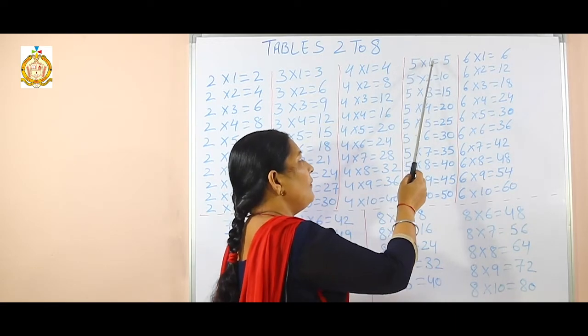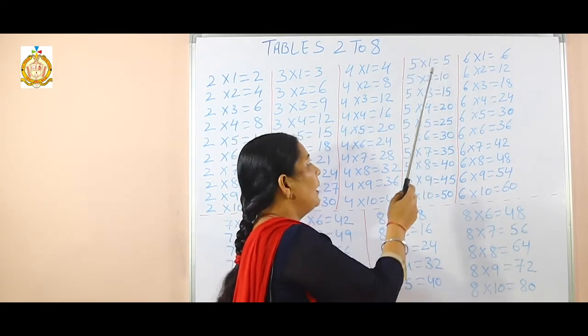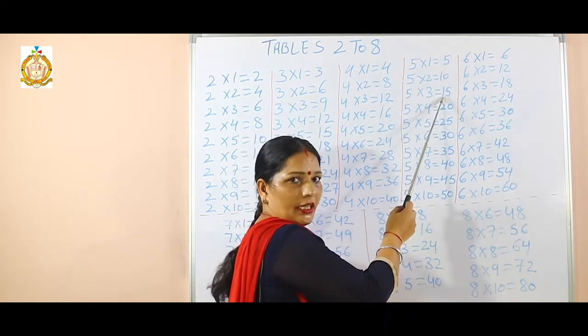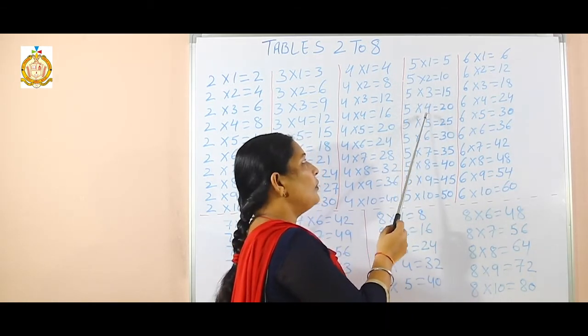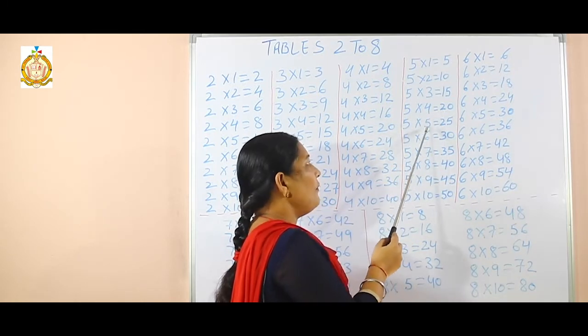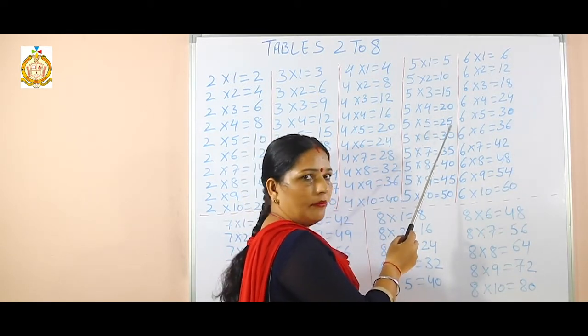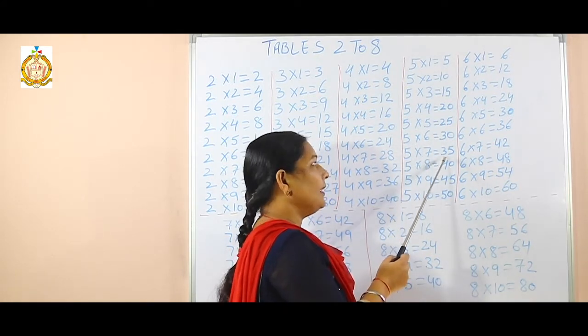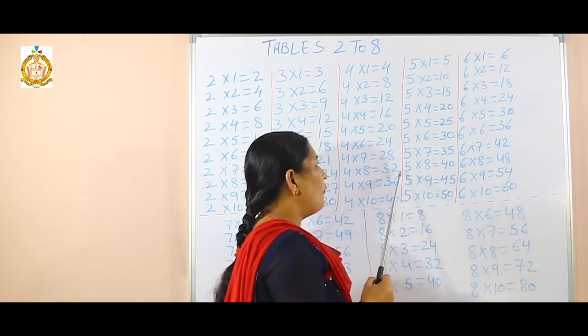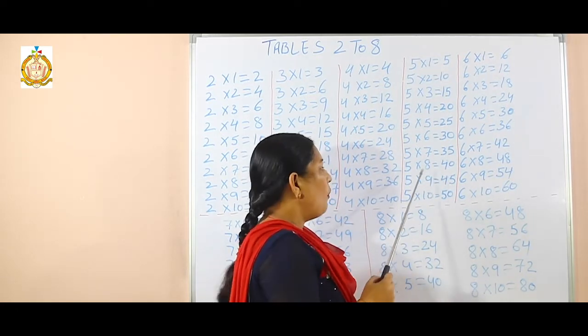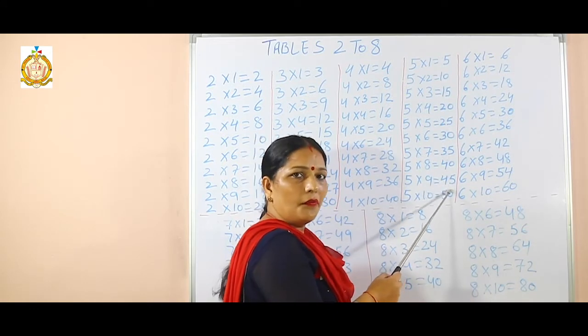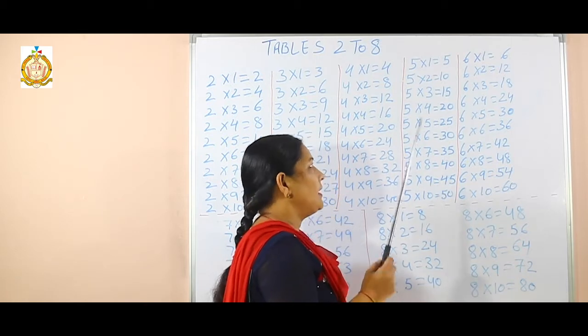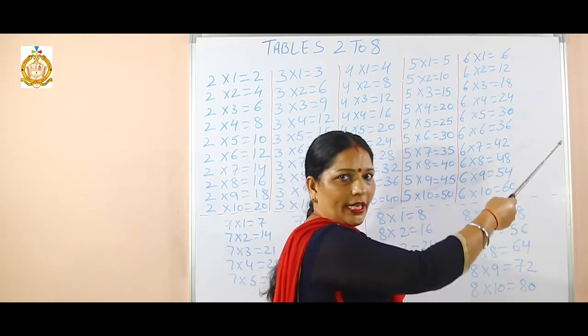Table of 5: 5 ones are 5, 5 twos are 10, 5 threes are 15, 5 fours are 20, 5 fives are 25, 5 sixes are 30, 5 sevens are 35, 5 eights are 40, 5 nines are 45, and 5 tens are 50.